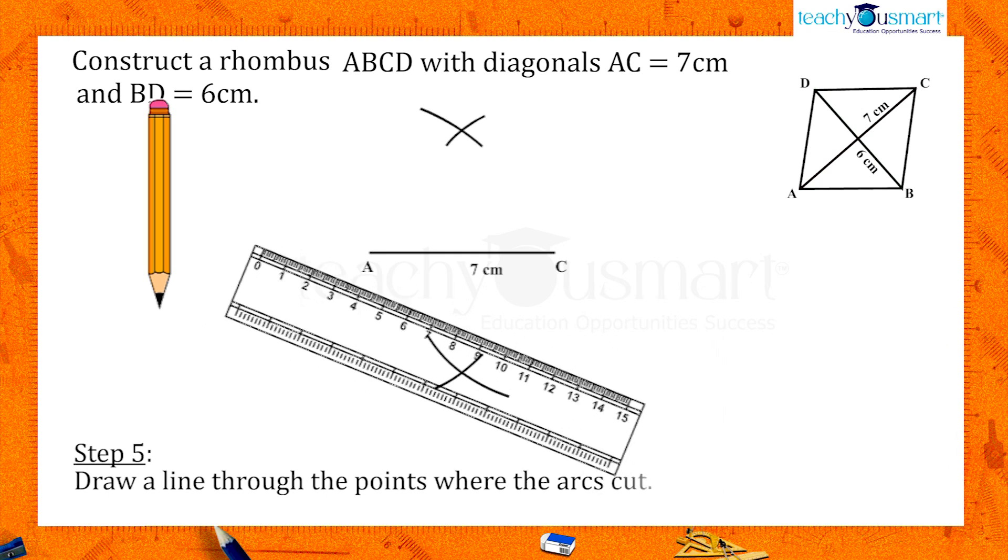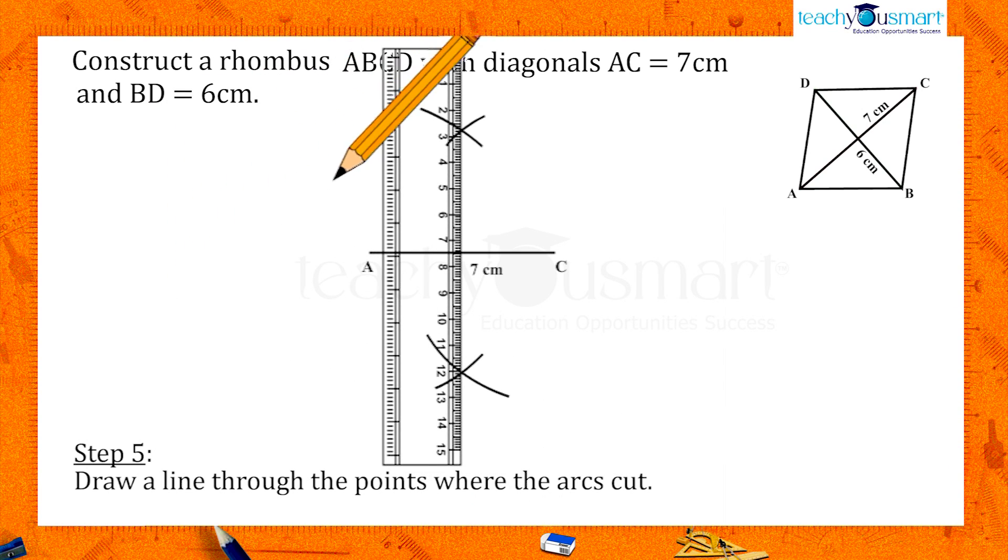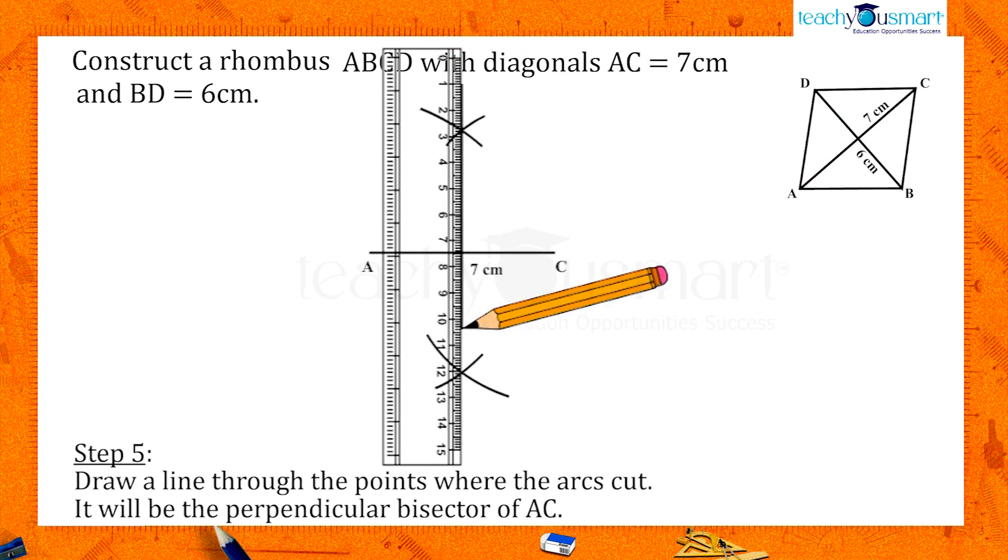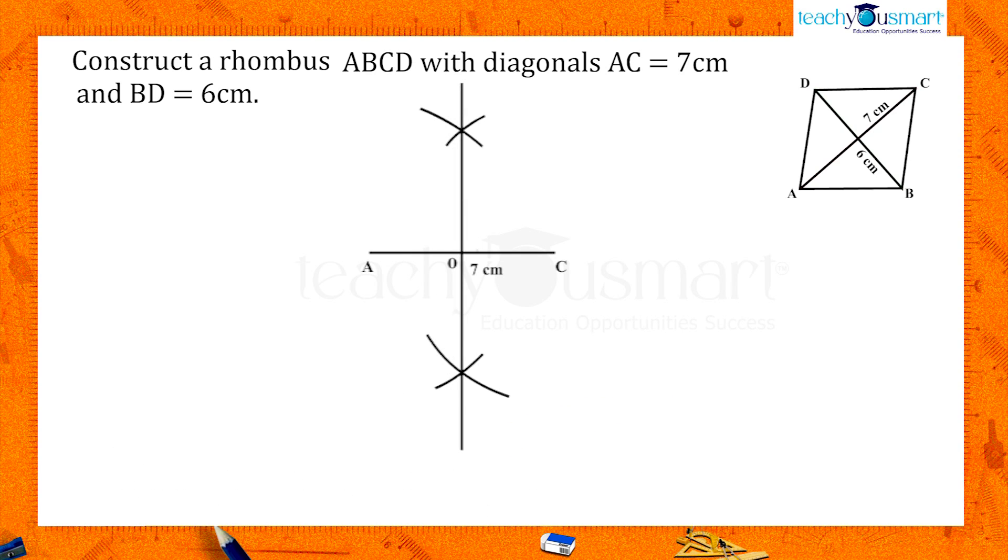Draw a line through the points where the arcs cut. That will be the perpendicular bisector of AC. Let O be the point where AC and the perpendicular bisector meet.